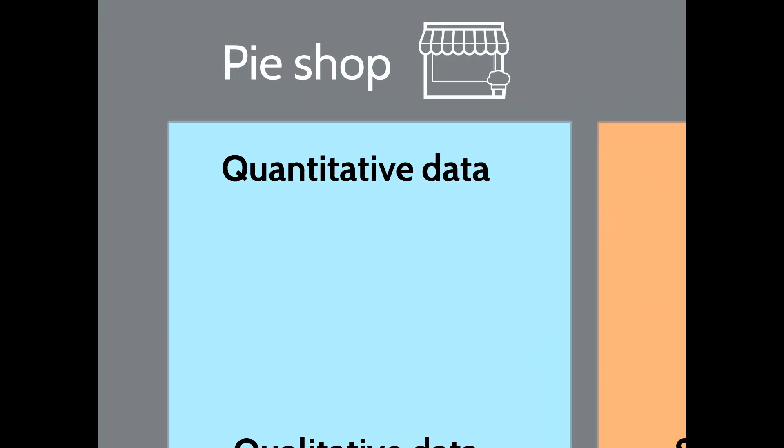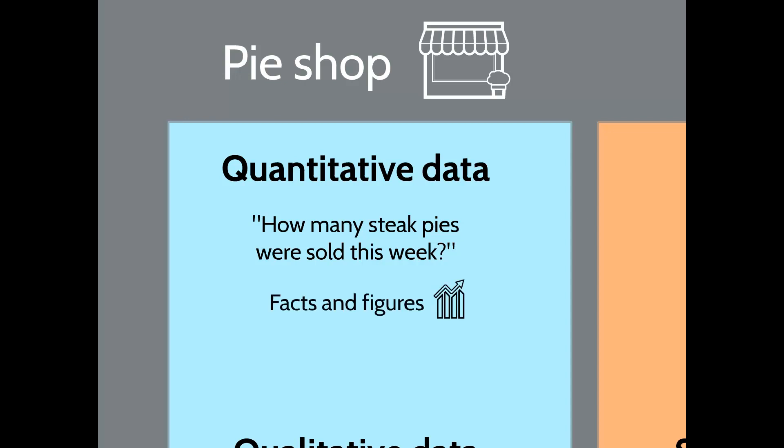Quantitative data for a pie shop would be the answer to a question such as: how many steak pies were sold in the last week? This is a fact, it is a figure, it's not open to interpretation. We have our pie shop, we sell pies, and how many steak pies did we sell this week? Essentially, quantitative data can be defined as anything that can be measured numerically.